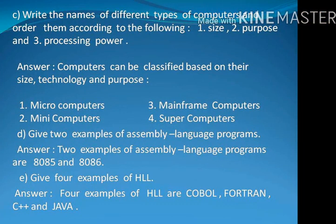Question C: Write the names of different types of computers and order them according to size, purpose and processing power. Answer: Computers can be classified based on their size, technology and purpose. Number 1: Microcomputer. Number 2: Minicomputer. Number 3: Mainframe computers. Number 4: Supercomputers.